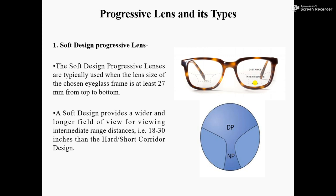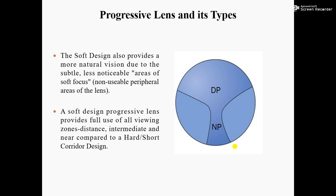The soft design intermediate portion covers 18 to 30 inches compared to the hard oblique short corridor design. The soft design also provides more natural vision due to less noticeable areas of soft focus in the non-usable peripheral areas of the lens, because of the wider intermediate portion the peripheral distortion is reduced.